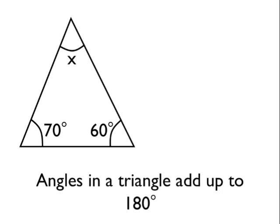In this diagram, I've got a triangle which has three interior angles. One is 70 degrees, one is 60 degrees, and there's an angle x which we are going to calculate the size of using this angle rule. So angles in a triangle add up to 180 degrees.